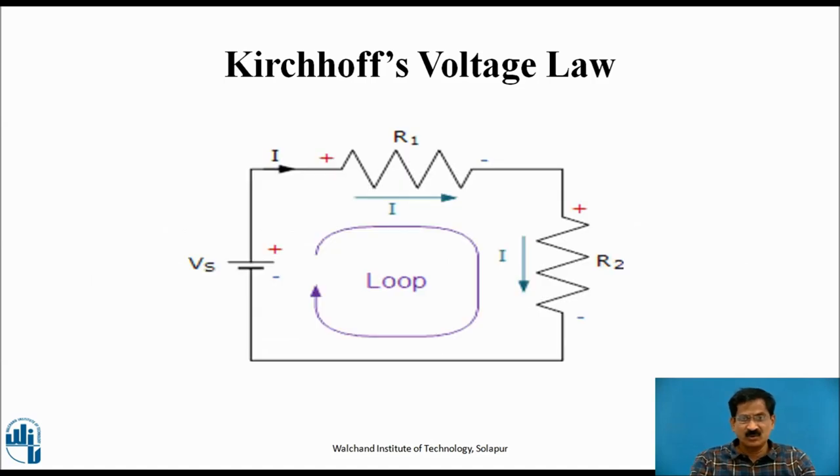Here is the circuit diagram for Kirchhoff's Voltage Law. Battery supply Vs, then two series resistances R1 and R2. The same current I flows through R1 and R2. The loop is shown consisting of a closed loop starting from Vs, R1, R2 and back to the negative terminal of voltage supply Vs. According to KVL, Vs must equal I times R1 plus I times R2. That is, the supply voltage must equal the drop across R1 plus drop across R2.